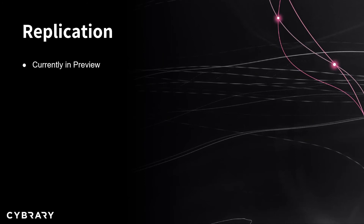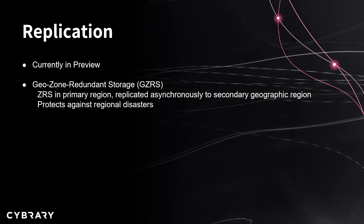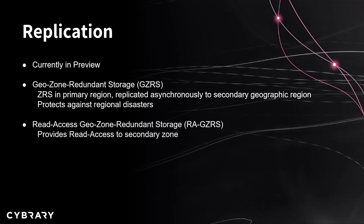We actually have two other replication options that at the time of this recording are currently in preview, so they're not really available for production-ready workloads, but you can definitely check them out now. The first one is Geo Zone Redundant Storage, or GZRS. This ups the ante by putting ZRS in your primary region so your data is distributed across multiple availability zones, and then that is replicated asynchronously to the secondary geographic region hundreds of miles away. This protects against regional disasters as well as availability zone issues inside the primary or secondary region. You will have to wait until Microsoft initiates the failover before you can read the data in the secondary region, or you can use Read Access Geo Zone Redundant Storage, or RA-GZRS, which provides full read access to the secondary zone before that failover is initiated.